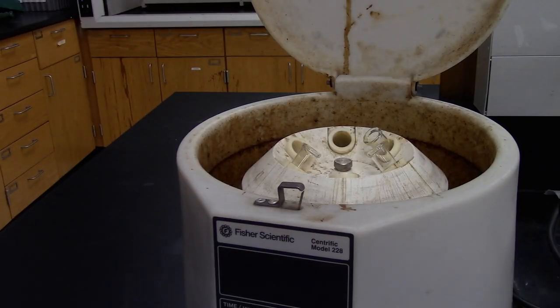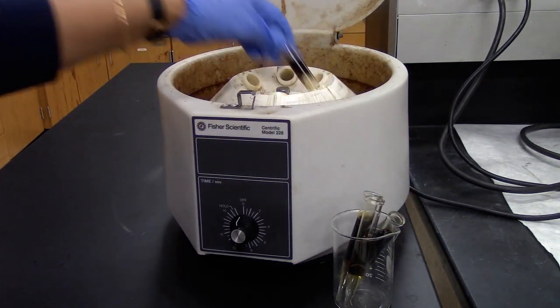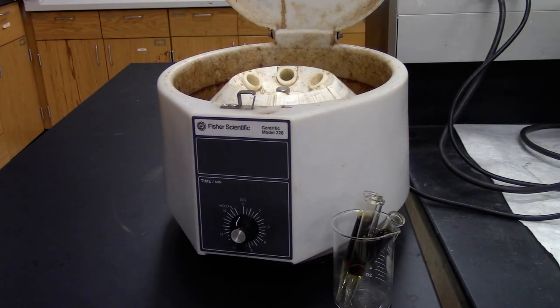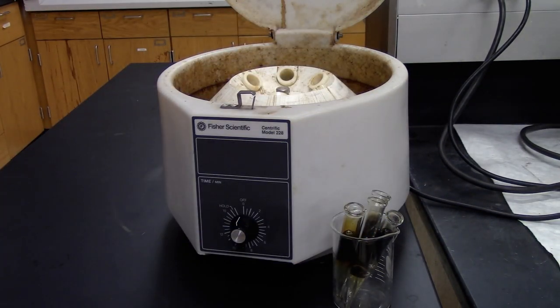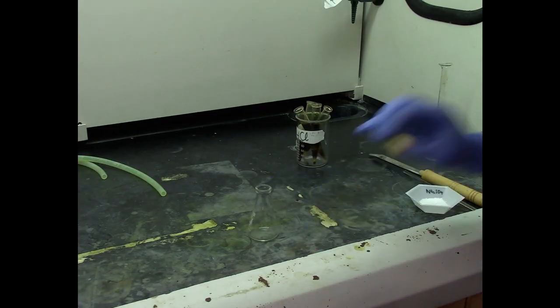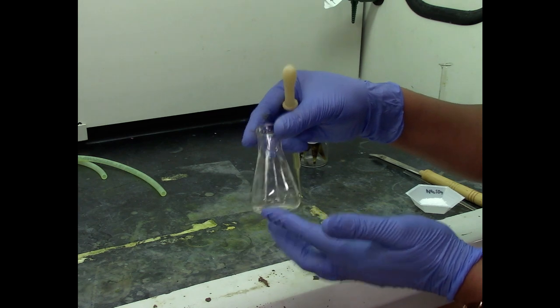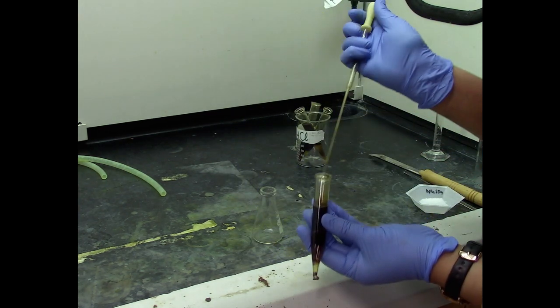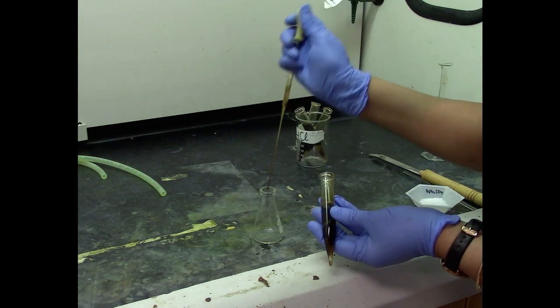Once done, the centrifuge tubes will have two layers. The bottom layer with the DCM and caffeine and the top layer is the aqueous layer. Using a long tip glass pipette, transfer the bottom layer of each of these centrifuge tubes into an Erlenmeyer flask.